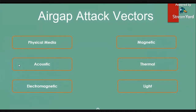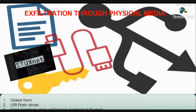The easiest and oldest form of attack vector is physical media. This is generally done using USB flash drives. Everyone in security knows about Stuxnet — it was sent through a USB flash drive to infect the whole system. That is one of the best examples of exfiltration through physical media.